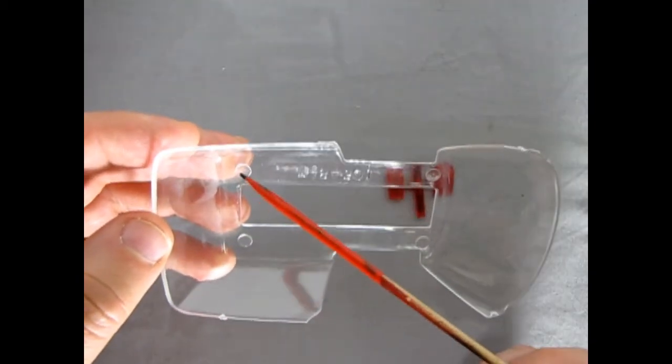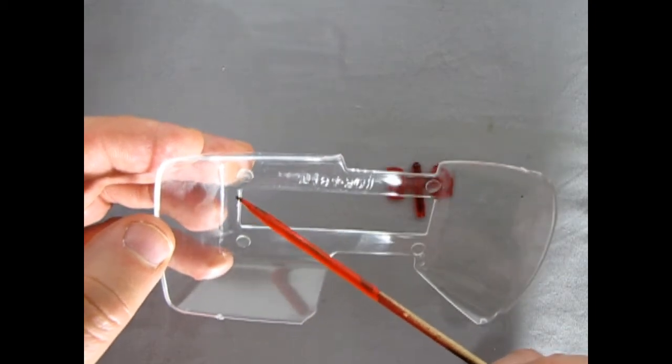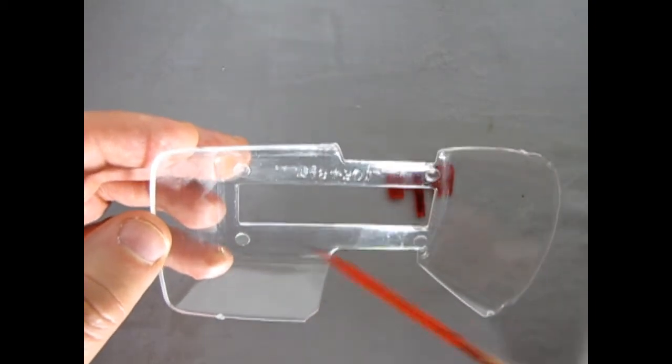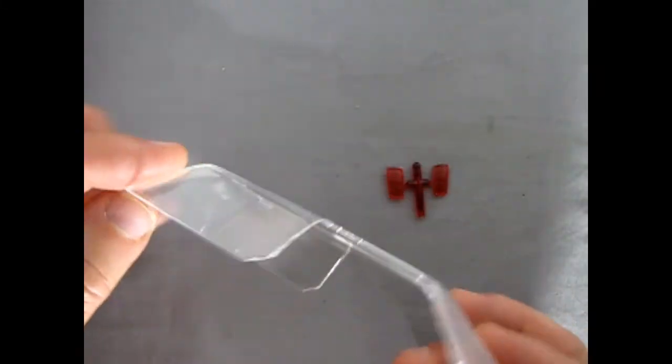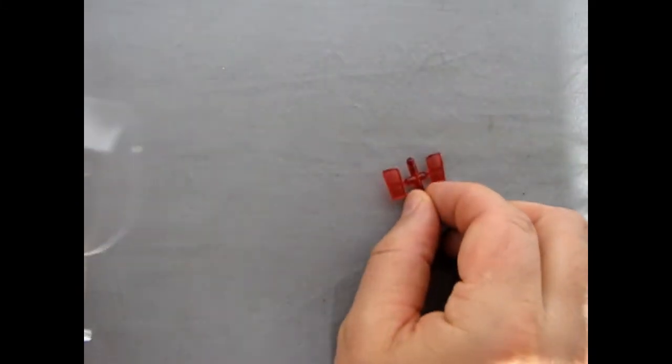But you can always cut this out or maybe even, if you're careful, dremel this back just so that you don't have these big rails sitting up through the roof. But again, that choice is yours. I'll just move the glass off to the side.